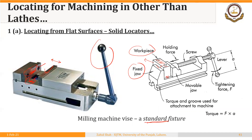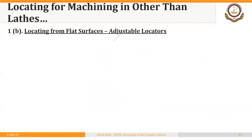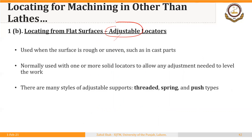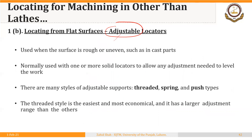The second type of locators used to locate a workpiece from a flat surface are adjustable locators. These are used for locating a workpiece whose surface is rough or uneven, such as a workpiece made using a casting operation like sand casting. They are normally used with one or more solid locators to allow any adjustment needed to level the work. For example, if using four locators, three might be solid and one adjustable. There are three types of adjustable locators: threaded, spring, or push types. The threaded style is the easiest and most economical and has a larger adjustment range than the other two.